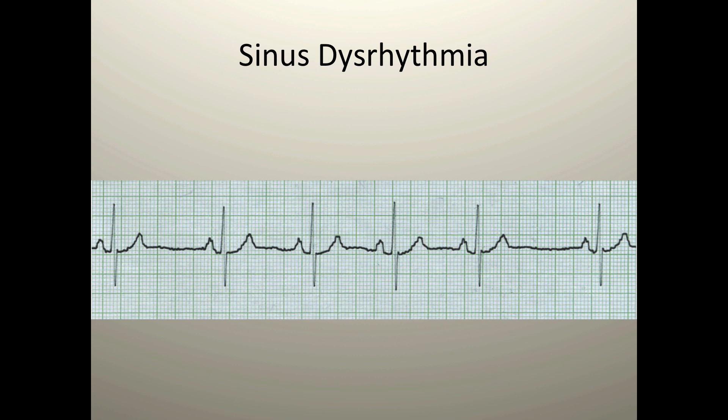Everything else stays the same with respect to the P wave, P wave shape, number of P waves, PR interval durations, QRS durations, and the underlying rate, which typically falls between 60 and 100 beats per minute. Stay tuned for more videos — we'll explore the atrial rhythms in a separate set of videos.